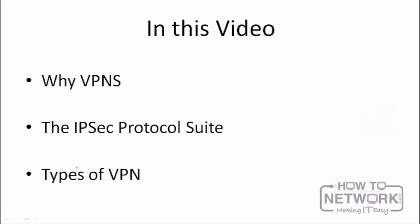To summarize, in this video we started by looking at why we need VPNs and examined the security issues of integrity, confidentiality, and authentication. We then explored all the protocols under the IPSec protocol suite — Triple DES, AES, pre-shared keys, certificate authorities, MD5, SHA-1, and Diffie-Hellman groups. Finally, we looked at the types of VPNs: site-to-site VPNs and remote access VPNs. Thank you very much for watching.